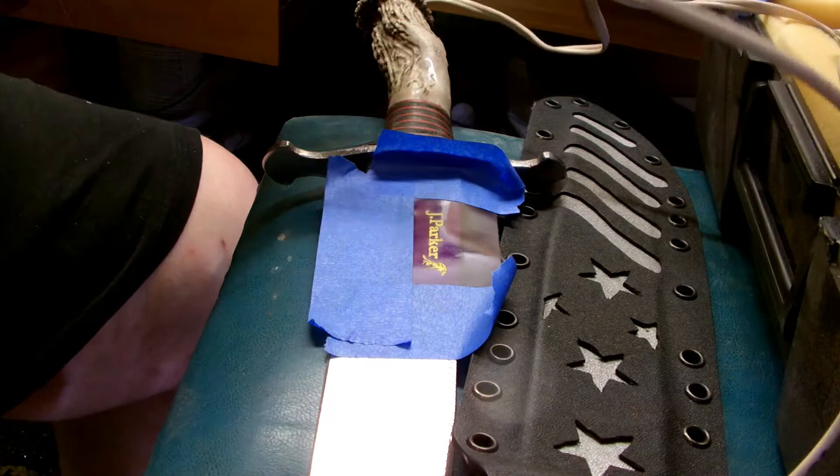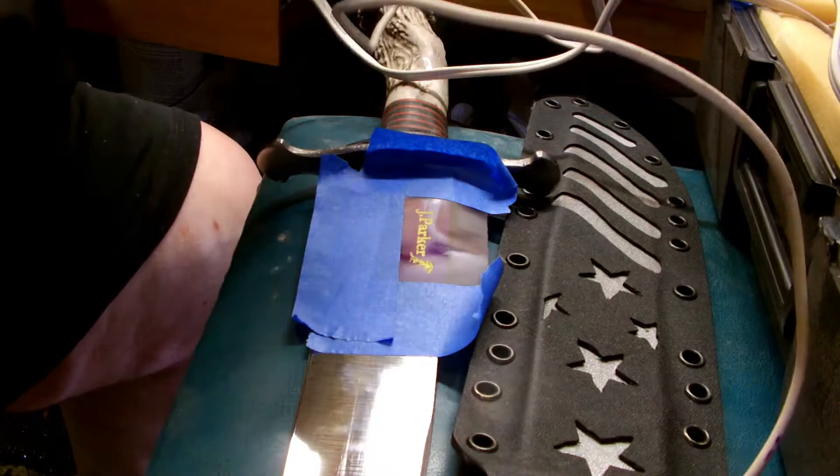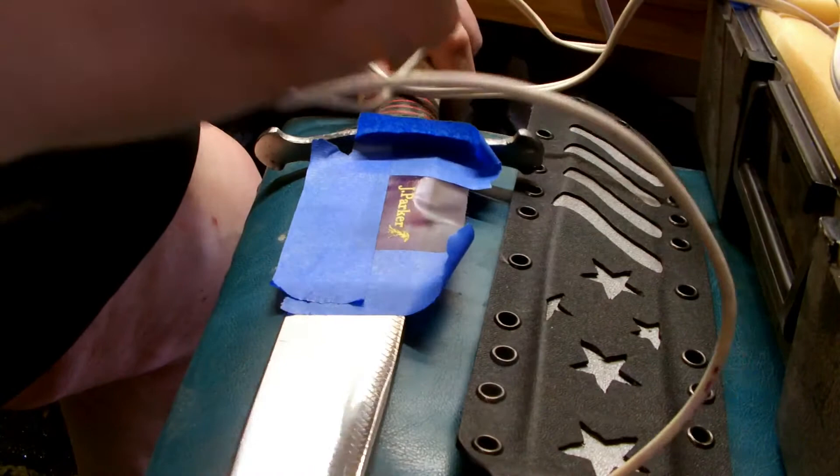They'll basically take up half the blade. These things here are like an inch and a half wide or something. Alright, so I'm just going to plug in and we'll start etching. I've got my lead all hooked up and everything. You probably can't see it. It's got the diode on it and everything to put this to DC so we can etch.